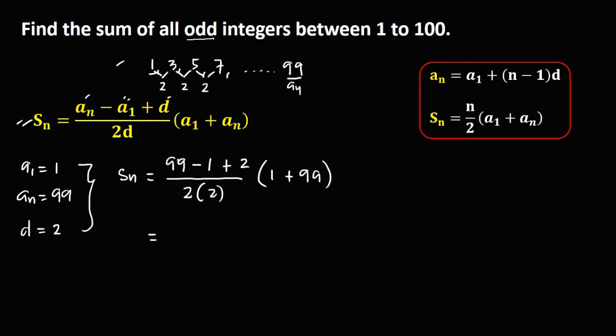Then simplify, so we have 99 minus 1, that's 98. And 98 plus 2, that's 100, then over 2 times 2, that's 4.